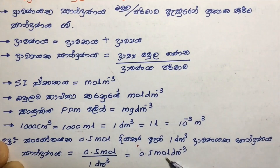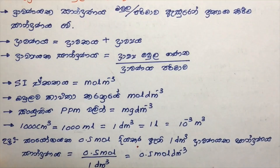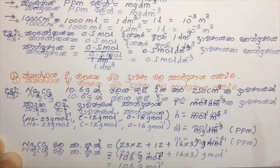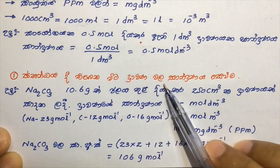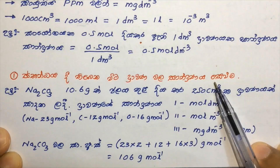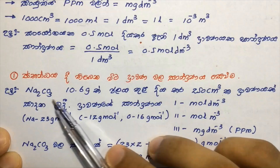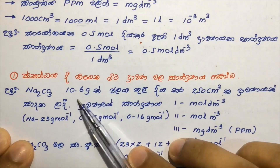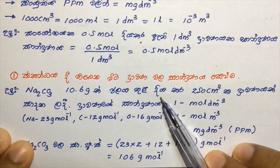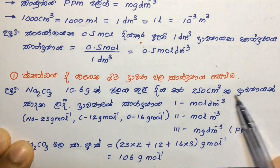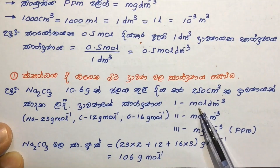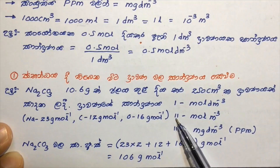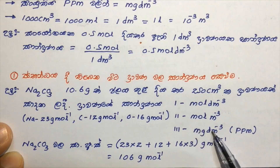2.5 mol dm⁻³. This is an example of a small amount of sodium carbonate — 1.5 mol dm⁻³. The measurements are 1.3 metres, 1.3 metres, and 3.3 metres.